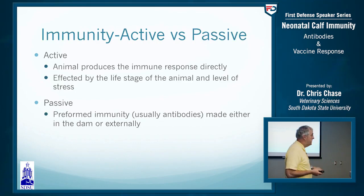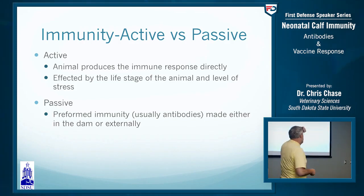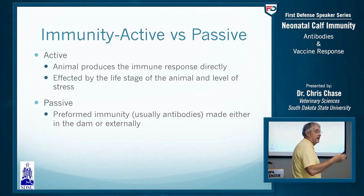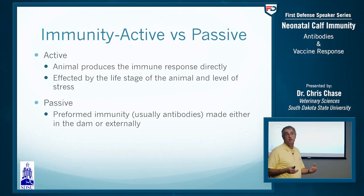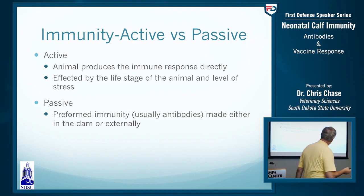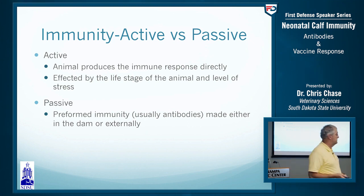Starting with something you all understand well - the difference between active and passive immunity. When we vaccinate animals, we're trying to get an active response where the animal generates memory, giving it duration of immunity. Passive immunity is preformed immunity that comes from another source - colostrum from the mother cow - but it has a fixed lifespan.